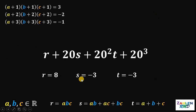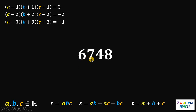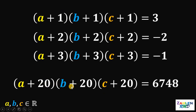We now have r = 8, s = negative 3, and t = negative 3. We can now evaluate: r + 20s + 20 squared times t + 20 cubed = 8 + 20(negative 3) + 400(negative 3) + 8000 = 6748. Therefore, the value of (a+20)(b+20)(c+20) is 6748, and that is our answer.